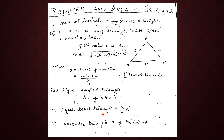For the equilateral triangle, we know that all three sides are equal, so the formula is root 3 by 4 times a squared. For the isosceles triangle, the formula is 1 by 4 into b times the square root of 4a squared minus b squared.